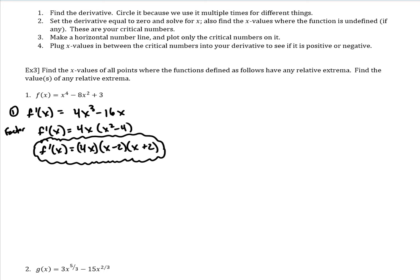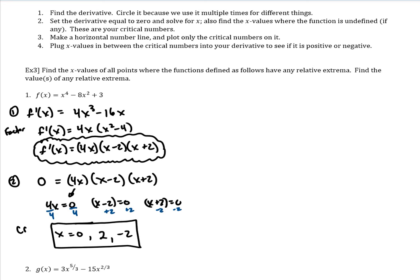So now that we have the factored form, we set our derivative equal to zero. So zero is equal to 4x times x minus 2 times x plus 2. And then we set each of these, so if you have a product, that's why we like to factor it, so if you have a product you can set each of them equal to zero, each part of the product. And then these are all pretty easy to solve. This first one I just need to divide by 4, second one I need to add 2, the last one I need to subtract 2 from both sides. So I've got my x is 0, that's 2 and then negative 2. So these are the critical numbers.